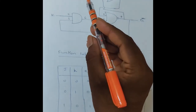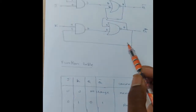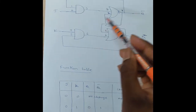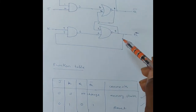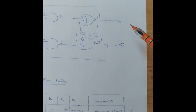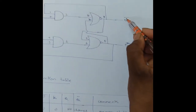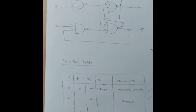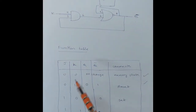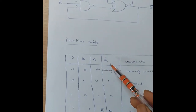Hi students, today's experiment is the JK latch. This is the circuit diagram of the JK latch. These are the AND gates and these are the NOR gates. J and K are the inputs, and the outputs are Q and Q-bar.